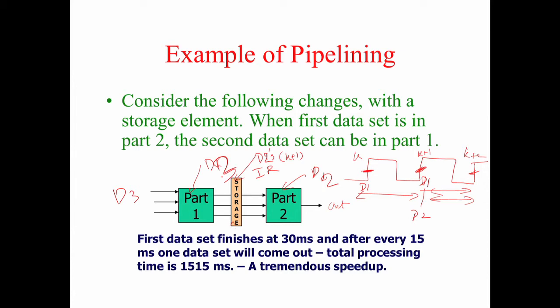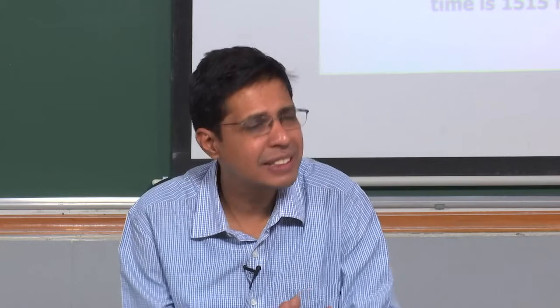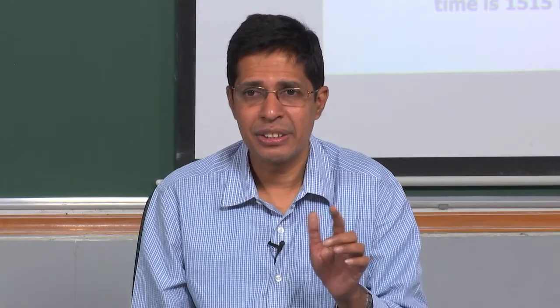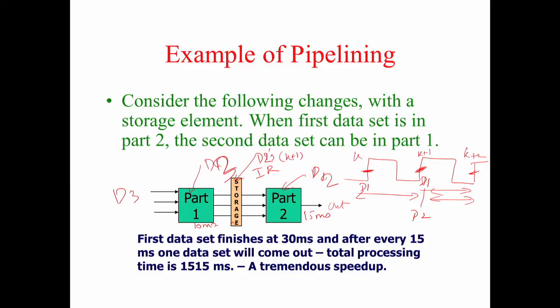Without pipelining we took 2500 milliseconds for 100 sets of data at 25 milliseconds per data. Now with pipelining, Part 2 is 15 milliseconds and Part 1 is 10 milliseconds. The clock period must be at least 15 milliseconds. The first data will come out at 30 milliseconds, and then every 15 milliseconds you get one data. So the total time for 100 data sets is 1515 milliseconds — at least a 40% improvement.